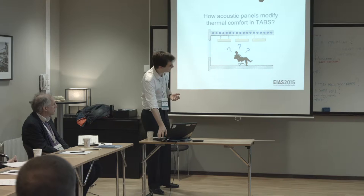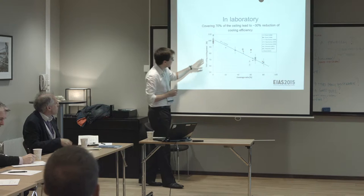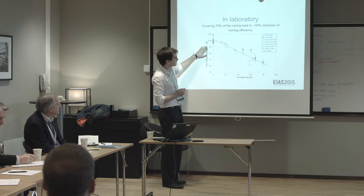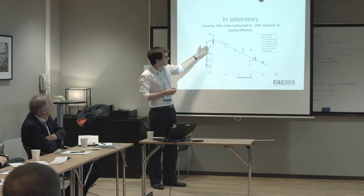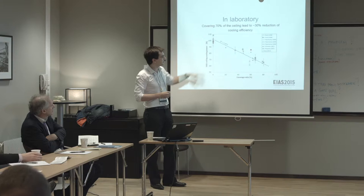We obtained this graph. On the vertical axis, it's the TABS cooling power — the ability of the TABS ceiling to cool and to restore thermal comfort in the room — expressed in percent. On the horizontal axis, it's the coverage ratio. We can estimate from this that covering 70% of the ceiling with horizontal panels will give you a reduction of around 30% of the cooling.